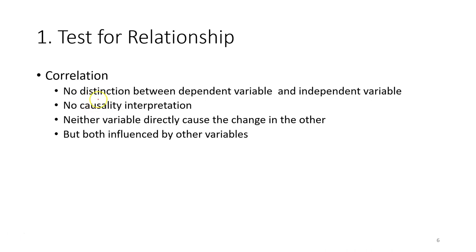For correlation there is no distinction between dependent and independent variables. For example, body height and body weight—both of them are independent variables. There's no causality interpretation. It's not x causes y. Neither variable directly causes the change in the other, but both variables may be influenced by other variables. For example, body height and body weight may both be influenced by age.